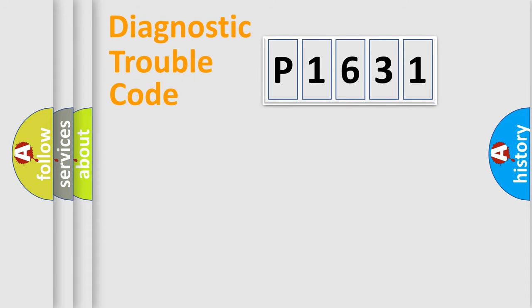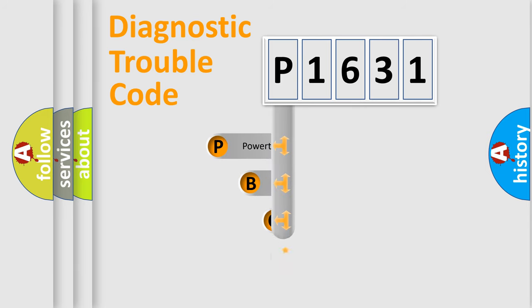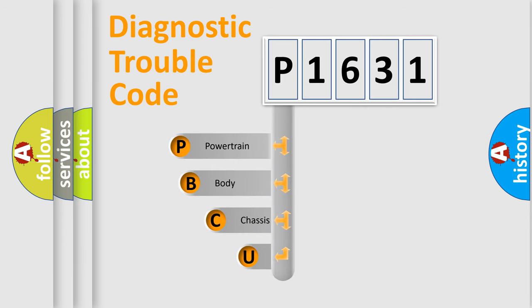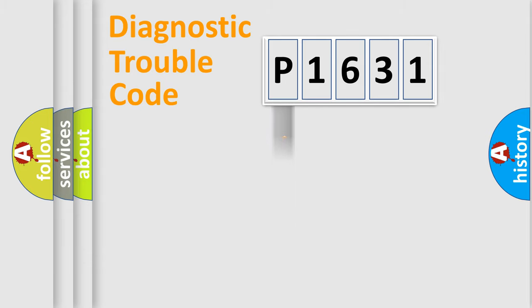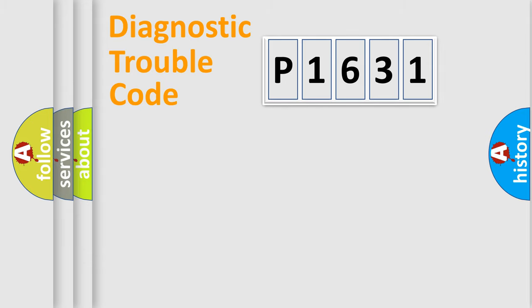Let's do this. First, let's look at the history of diagnostic fault code composition according to the OBD2 protocol, which is unified for all automakers since 2000. We divide the electric system of automobile into the four basic units: Powertrain, Body, Chassis, and Network.